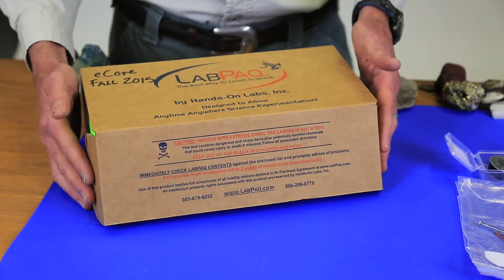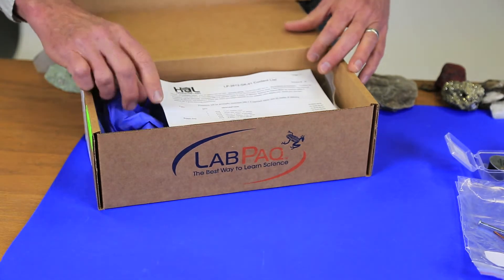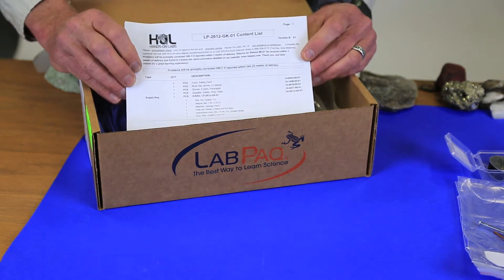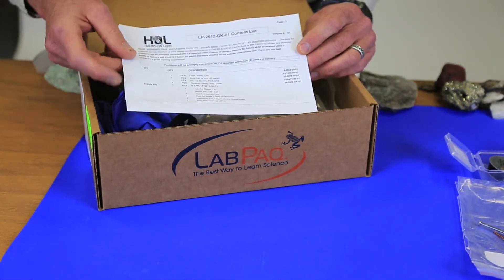So take a second to grab your lab pack kit and then let's open it up and have a look at what's inside. In the inventory and contents you have a content list which has numbered items and a description of each one, so you want to make sure everything is in place.